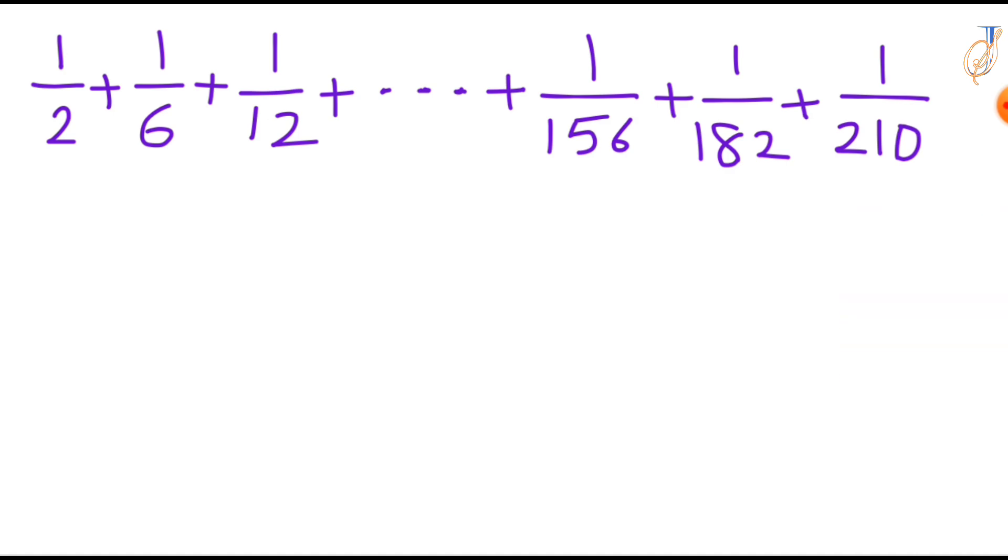To better understand the series, we notice that each term in the series, specifically the denominators. We have denominators 2, this 2 we can write it as 1 times 2, and this 6 we can write it as 2 times 3, and the denominator 12 we can write it as 3 times 4, and so on.